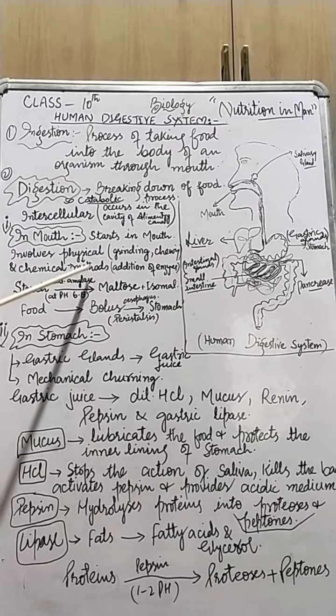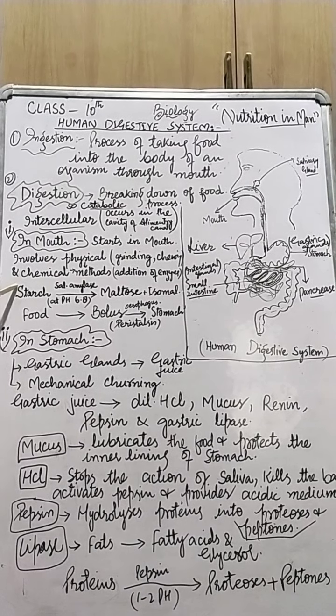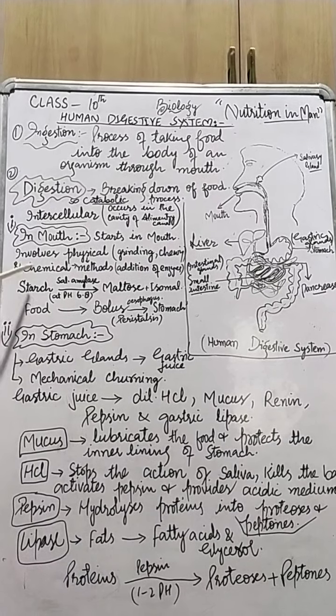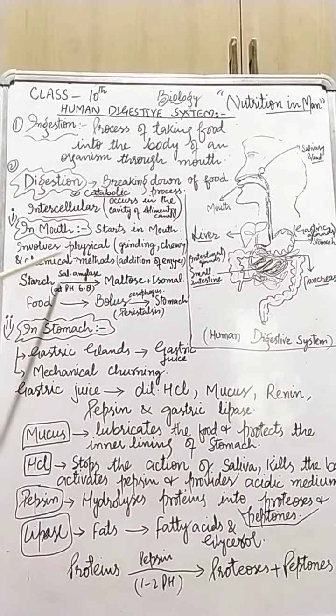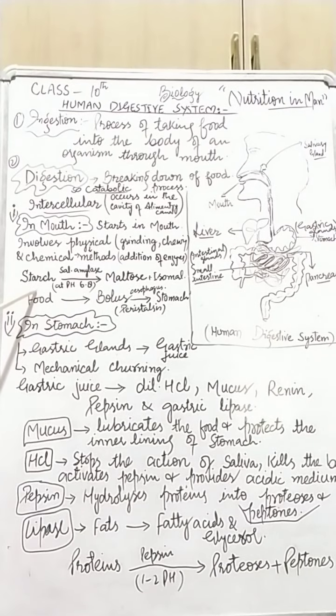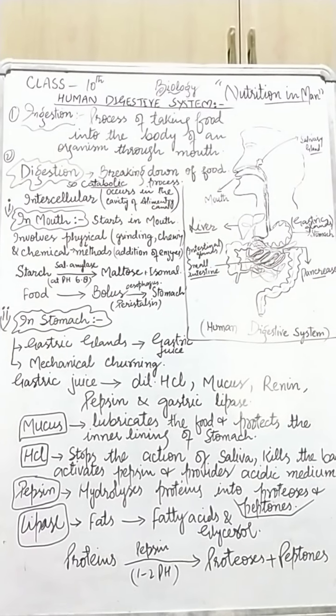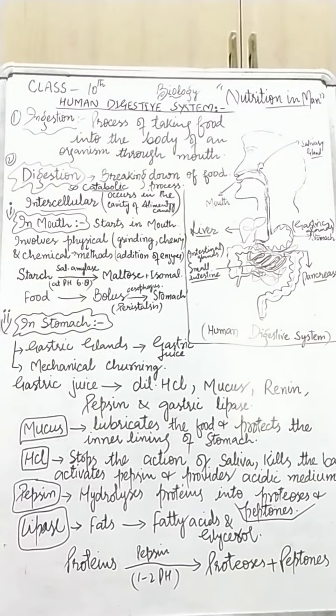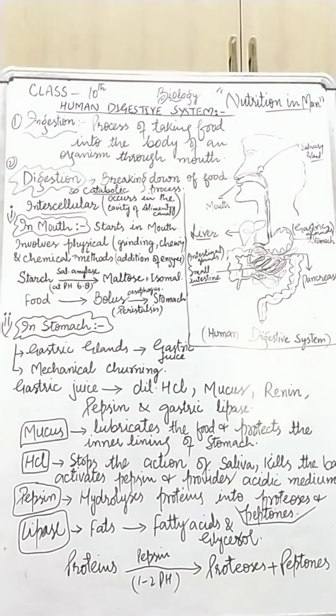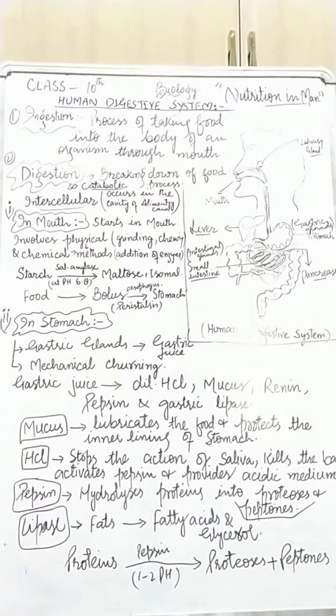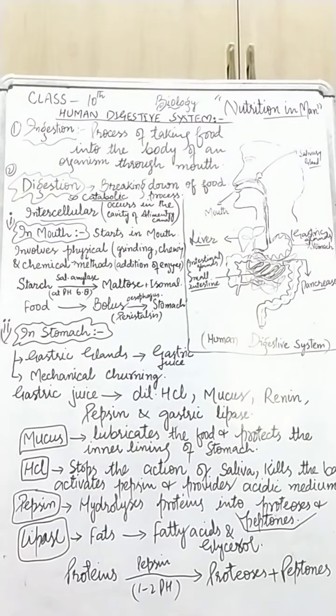The digestion occurs first by physical methods, that is by grinding and chewing of food, and the salivary glands - the three pairs of salivary glands secrete saliva. 30 to 40% starch is digested in our mouth. In the mouth, the food that we ingest is chewed by teeth and broken down into smaller particles so that large surface area is provided for the action of enzymes. This food is mixed with the saliva which is secreted by the salivary glands which moistens and lubricates the food and helps in swallowing.